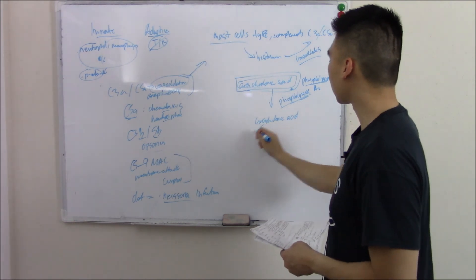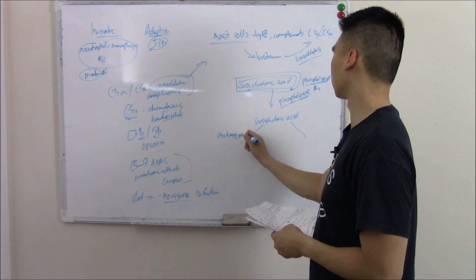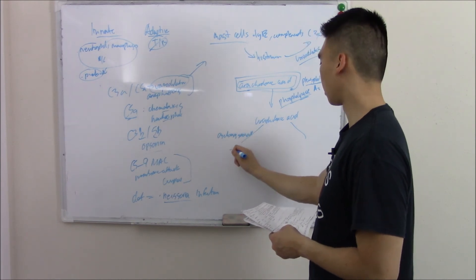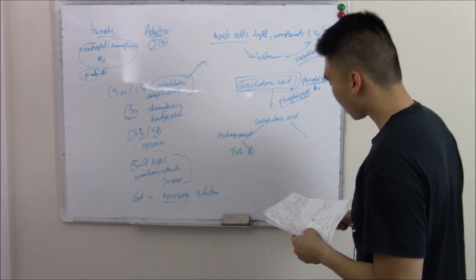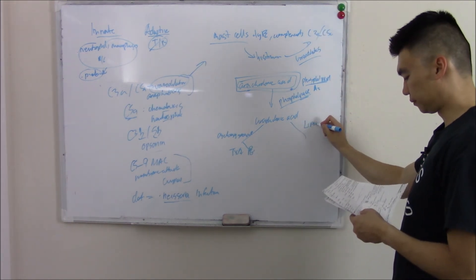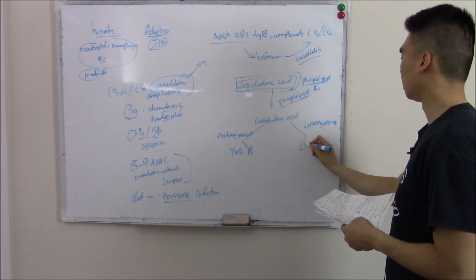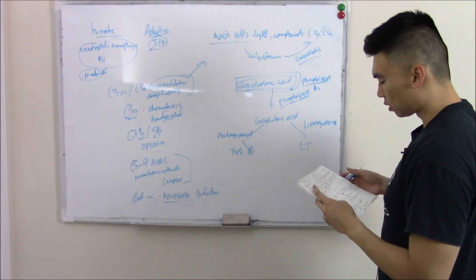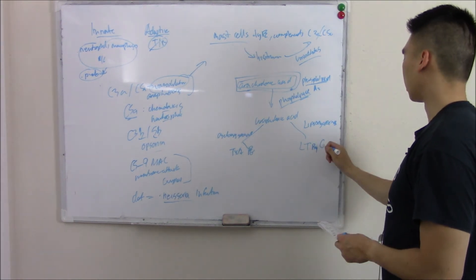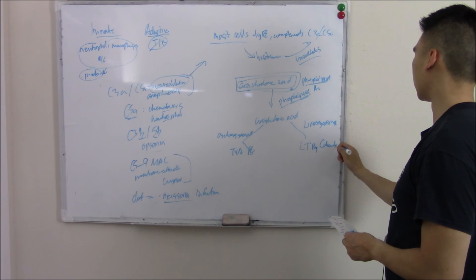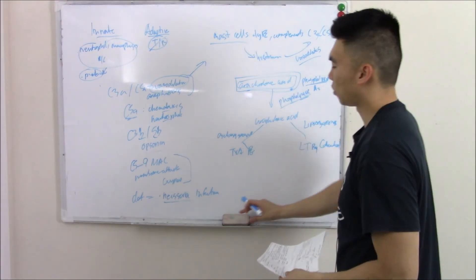Arachidonic acid can be worked on by cyclooxygenase to make thromboxanes and prostaglandins, or it can be worked on by lipoxygenase to make leukotrienes. An important leukotriene to know is leukotriene B4, which is a chemotactic agent that pulls in cells.